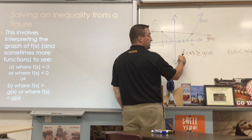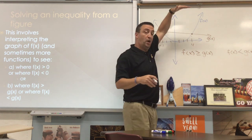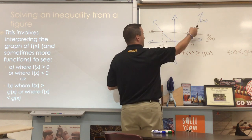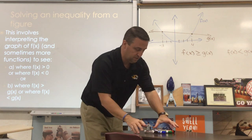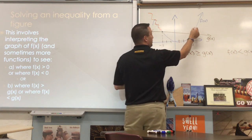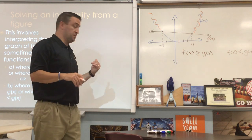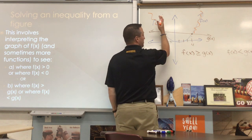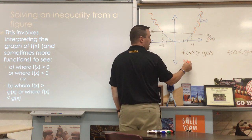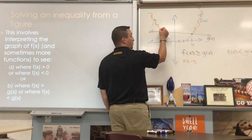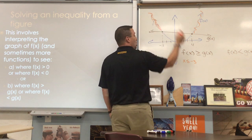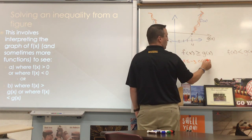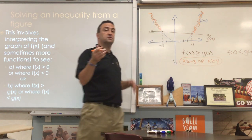Where is f(x) greater than g(x)? That's where the parabola is above the line. We give our answer in terms of x values. My f(x) is above g(x) out on the left and out on the right. So f(x) is greater than or equal to g(x) when x is less than or equal to negative 3, or when x is greater than or equal to 4. It still sets up a compound inequality.